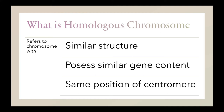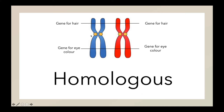This is an example of homologous chromosomes. They both have the same position of the centromere, the same structure, and the same gene content. For example, at this location, both chromosomes contain the gene for hair, and at this position, both chromosomes contain the gene for eye color.